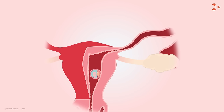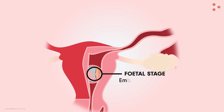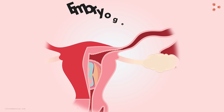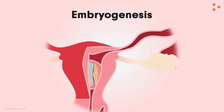Now the embryo is all set to grow into a baby. The stage where the organs of the baby's body start developing such that they can be identified is called the fetal stage. And the embryo can now be called a fetus. The fetus grows in the uterus and when the growth is completed, the child is all set to enter this beautiful world. This is how embryogenesis takes place in most of the animals.